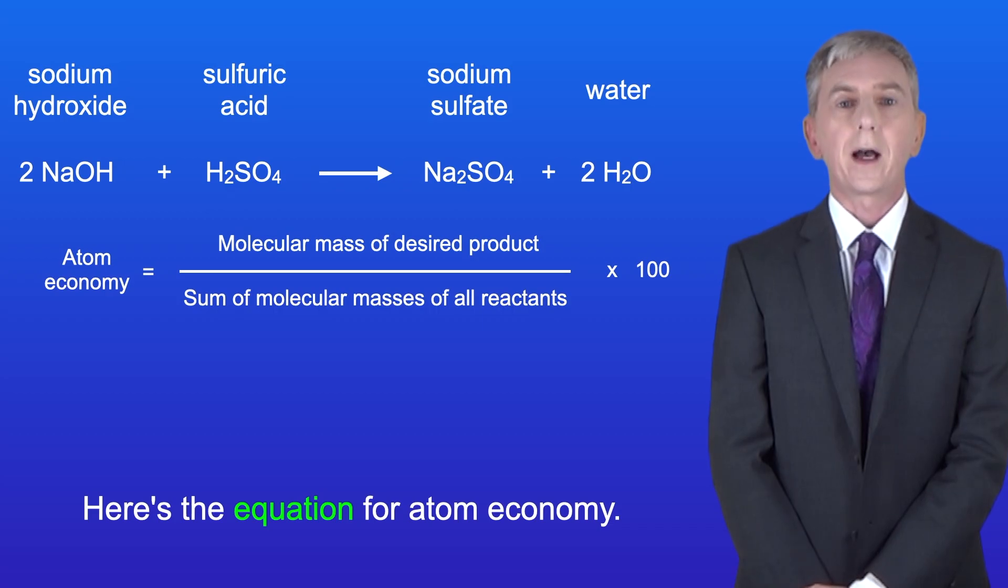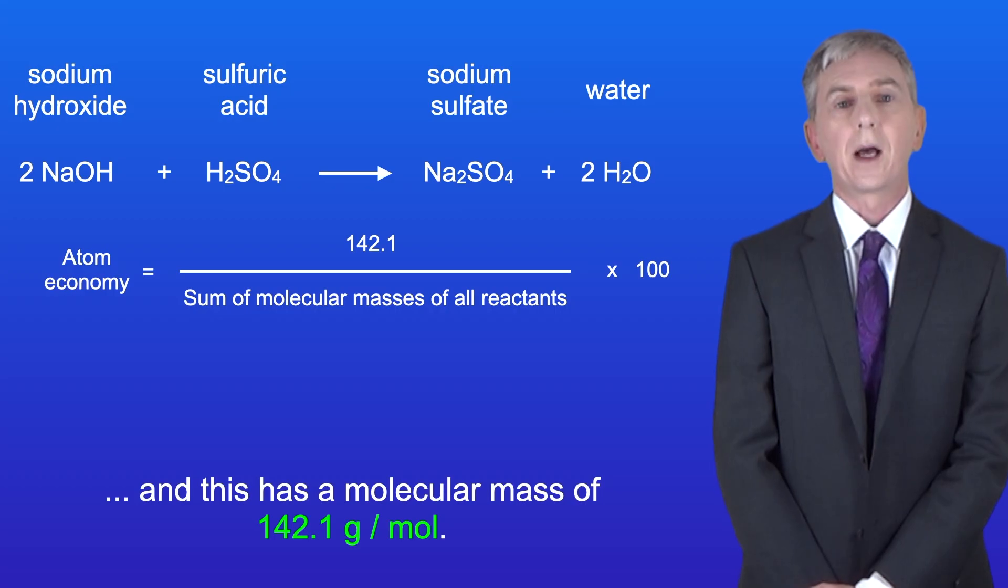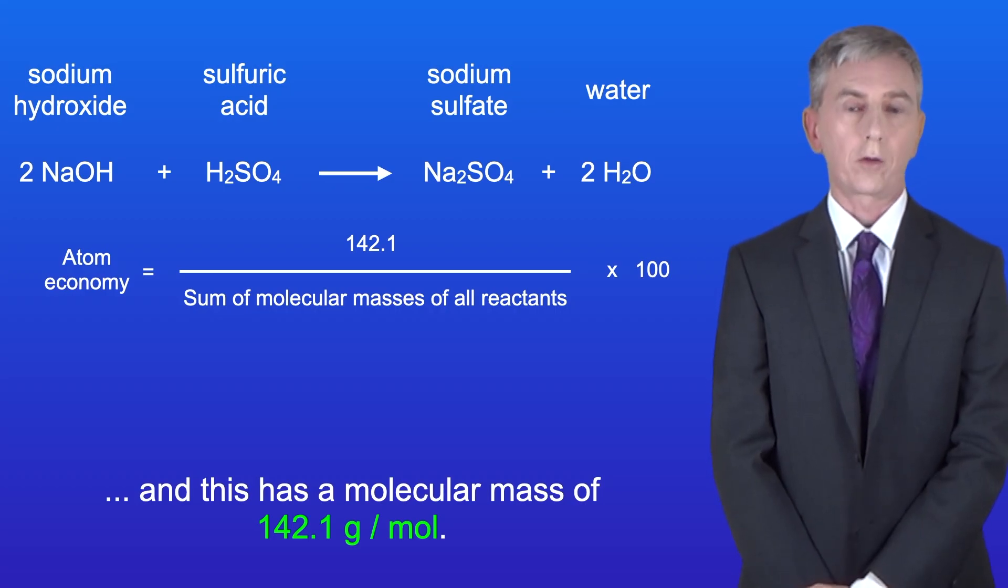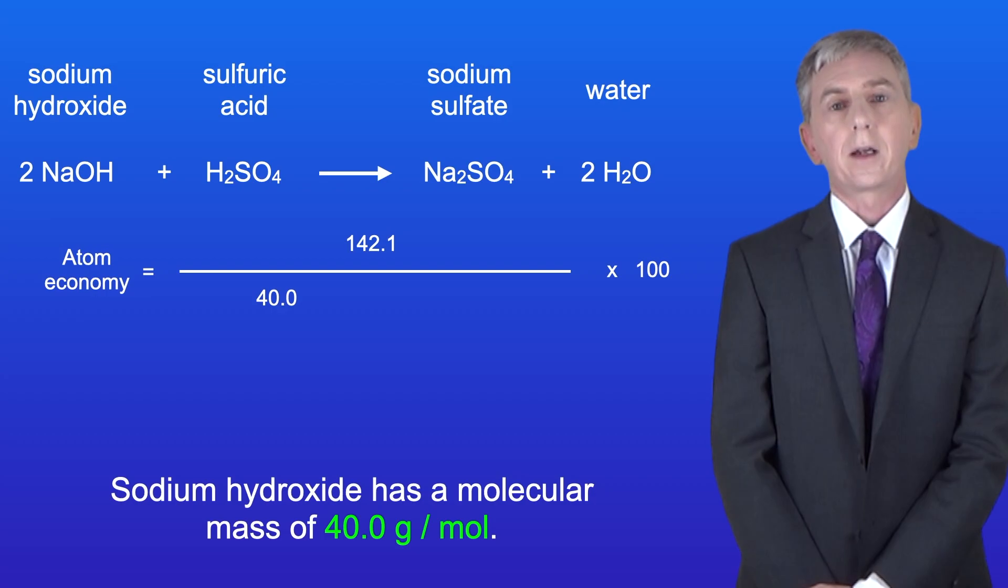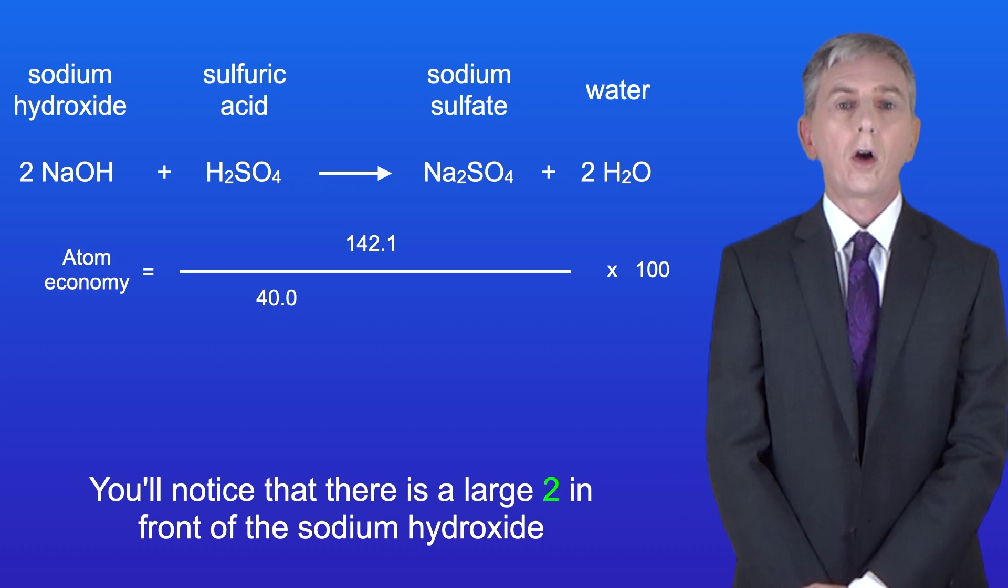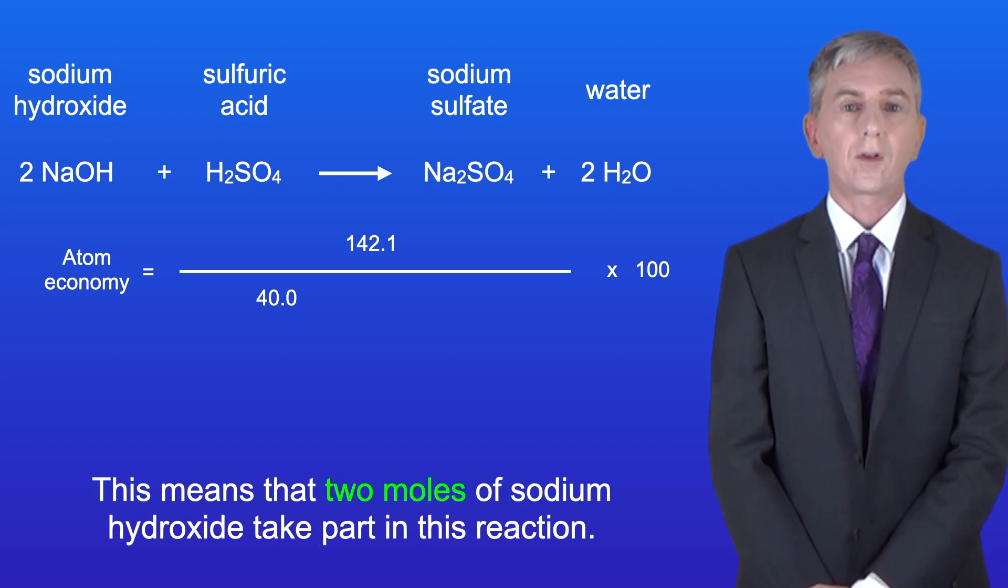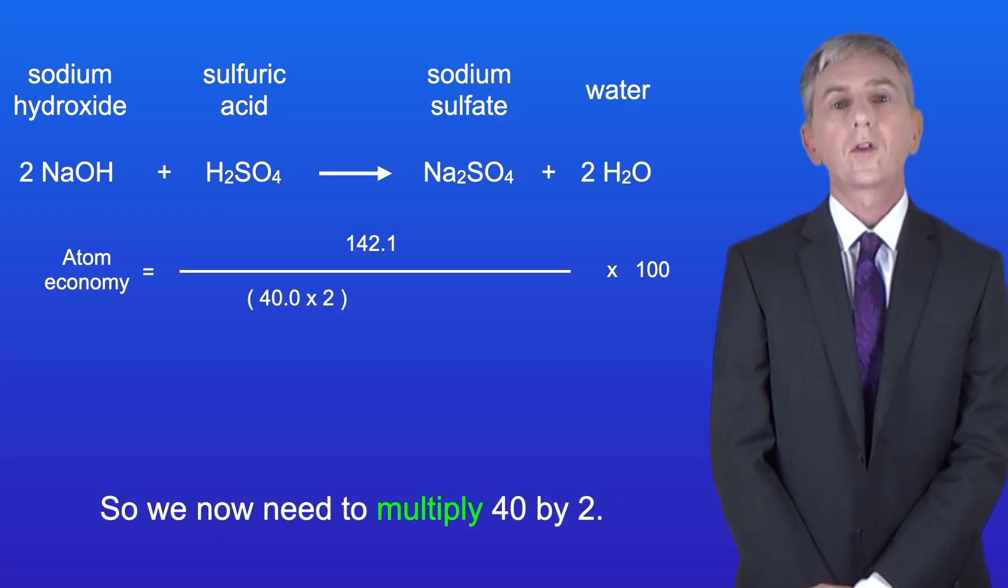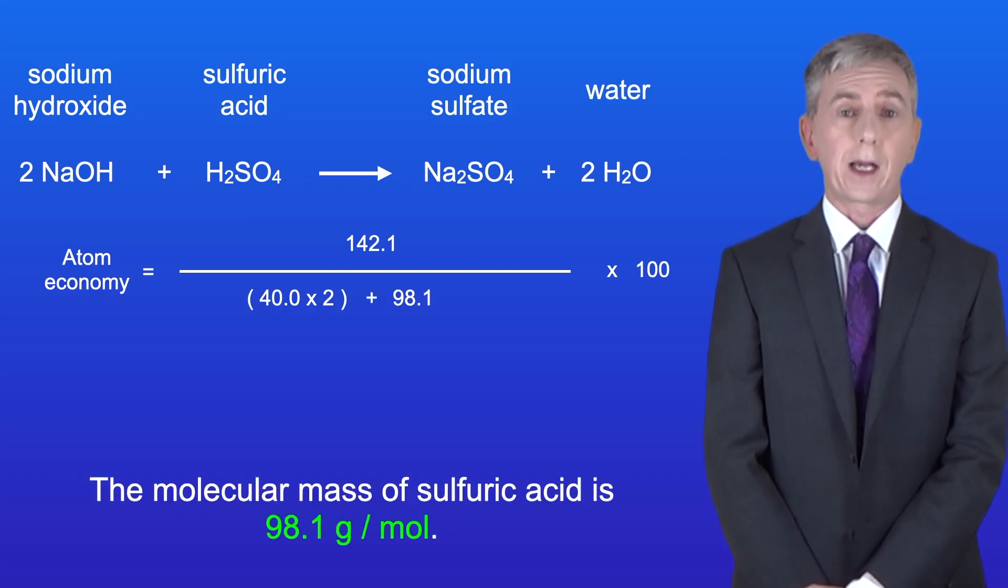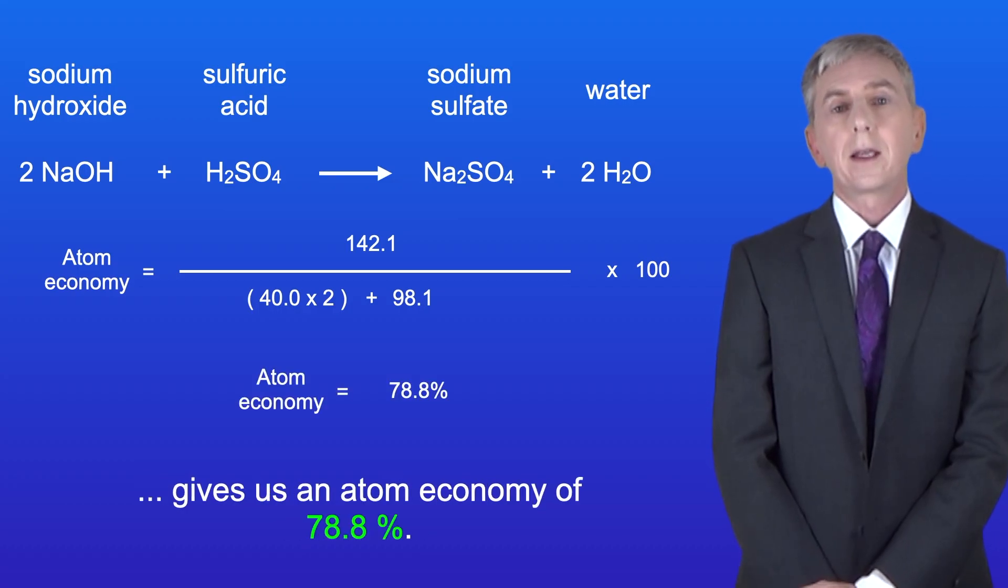Okay here's the equation for atom economy. The desired product is sodium sulfate and this has a molecular mass of 142.1 grams per mole. Sodium hydroxide has a molecular mass of 40.0 grams per mole. Now you'll notice that there's a large 2 in front of the sodium hydroxide. This means that 2 moles of sodium hydroxide take part in this reaction so we now need to multiply 40 by 2. The molecular mass of sulfuric acid is 98.1 grams per mole. Putting these numbers into the equation gives us an atom economy of 78.8 percent.